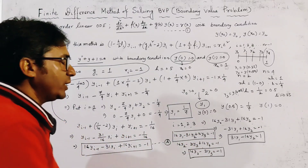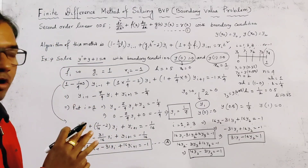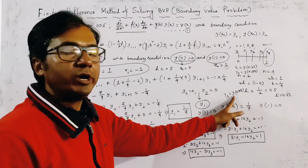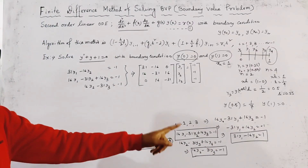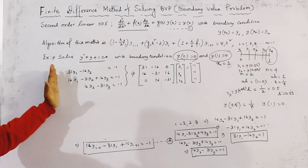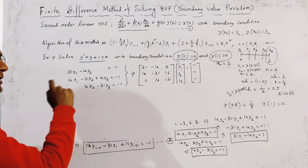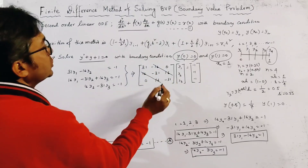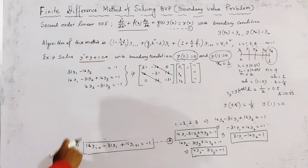We now solve these three simultaneous equations to find y₁, y₂, and y₃, giving approximations at y(0.25), y(0.50), and y(0.75). Writing these three equations together in matrix form, it is clear that the matrix is a tri-diagonal system, with non-zero entries only on the main diagonal and adjacent diagonals, which is easy to solve.